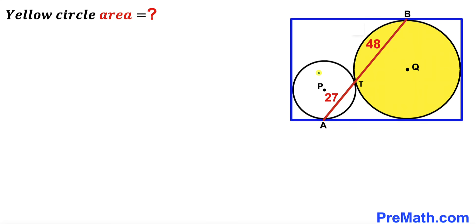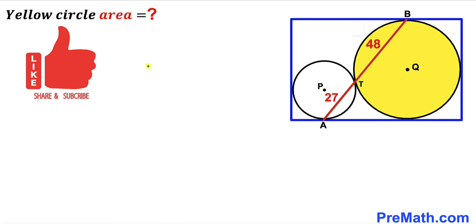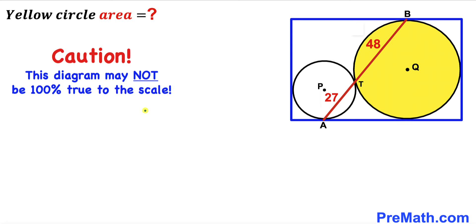Welcome to pre-math. In this video we have got two circles fully inscribed in a blue rectangle, where P is the center of the smaller circle and Q is the center of the yellow circle. We have segment AB where A and B are on the blue rectangle, such that segment AT is 27 units, segment BT is 48 units, and T is the point of tangency. Our task is to calculate the area of the yellow shaded circle. Note that this figure may not be 100% true to scale.